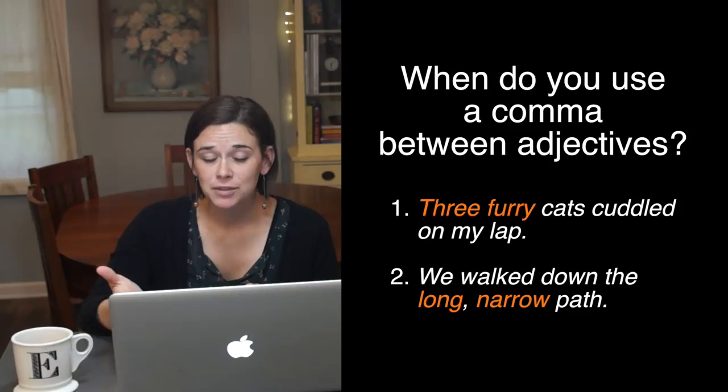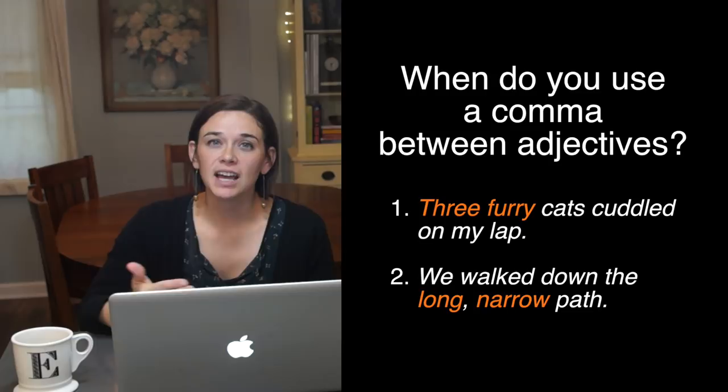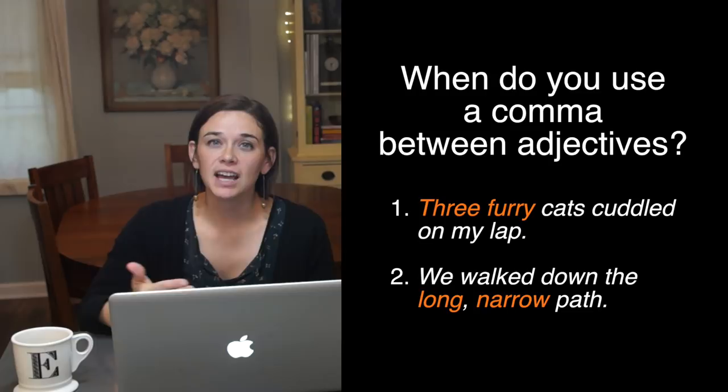Check out these two sentences. Why is there a comma between long and narrow in sentence two, but there's no comma between three and furry in sentence one?